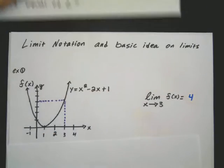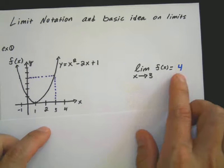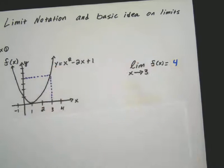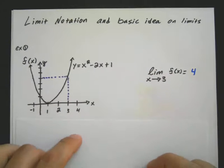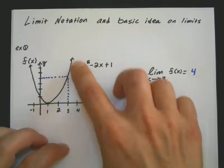Now going back to this example, the answer was 4 because both sides took me to 4. But you can specifically, if you want to, designate just one side. So you could approach 3 from the left, this side, and also from the right, this side.